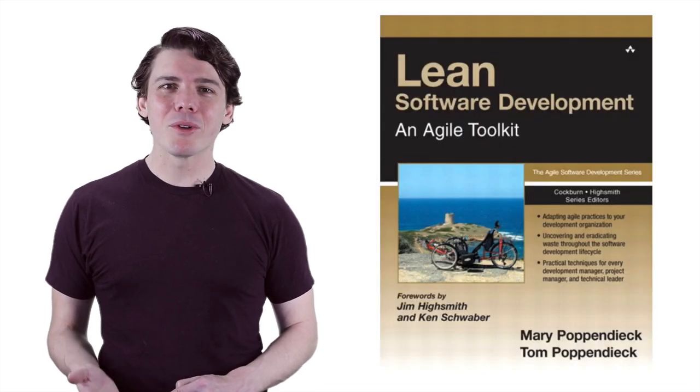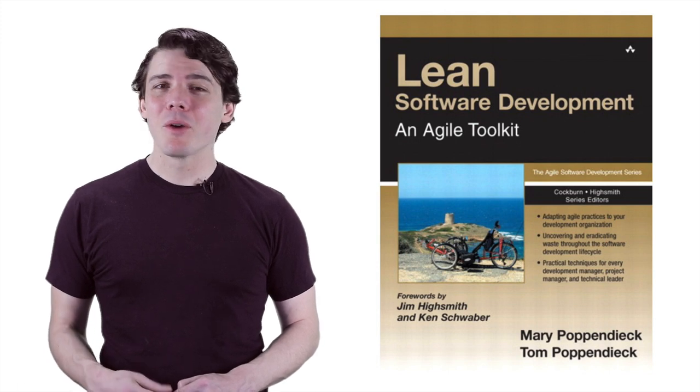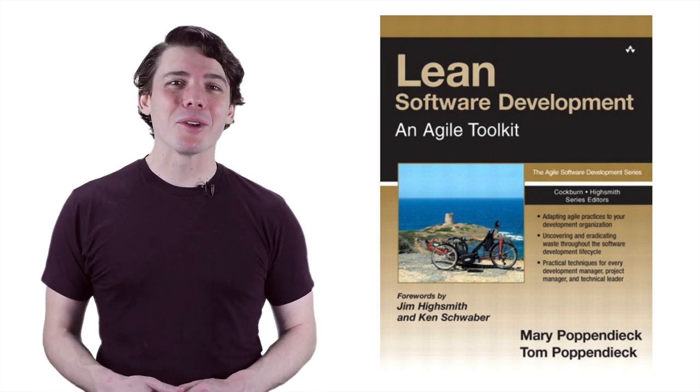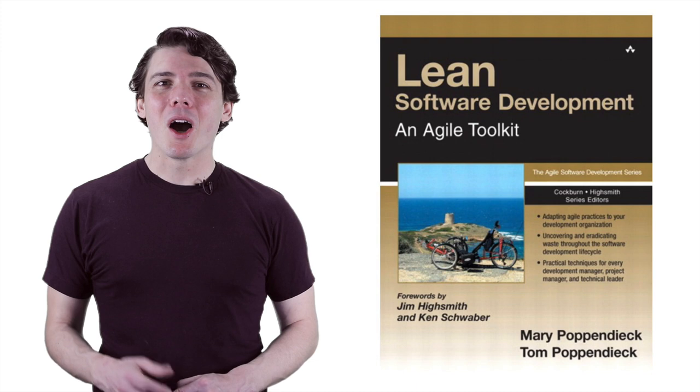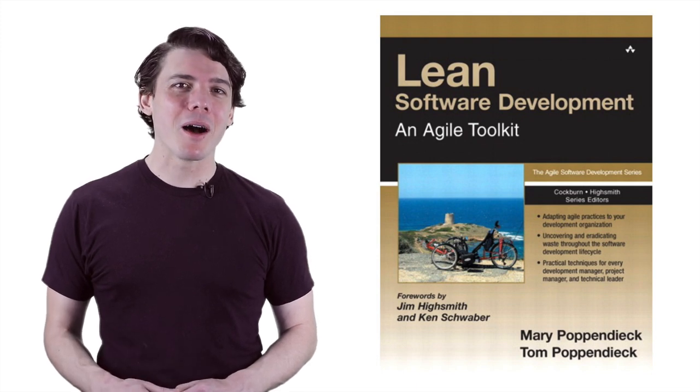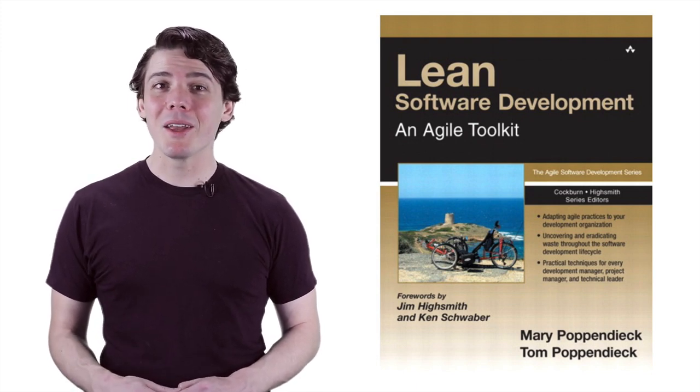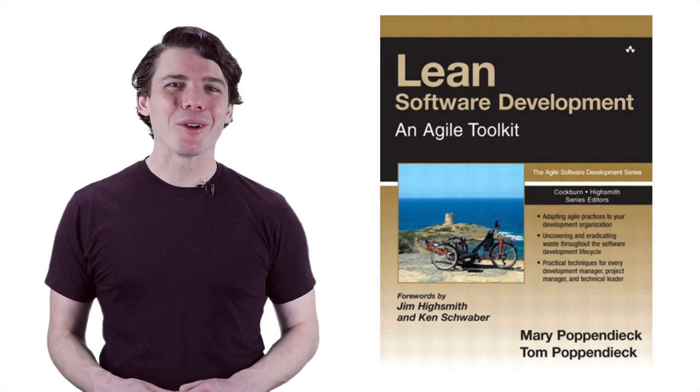Lean software development, based on lean manufacturing, which was ultimately derived from the Toyota production system, arrived on the scene with Mary and Tom Poppendieck's 2003 book, Lean Software Development, An Agile Toolkit.